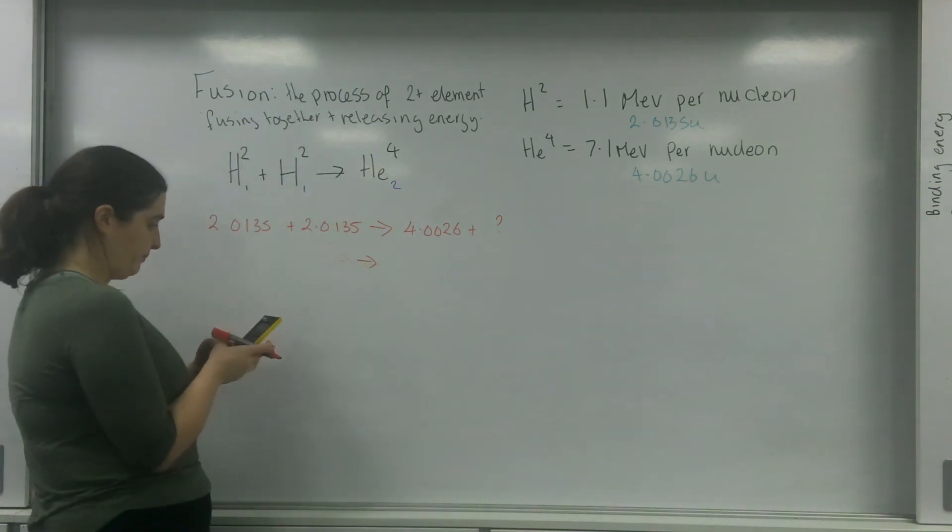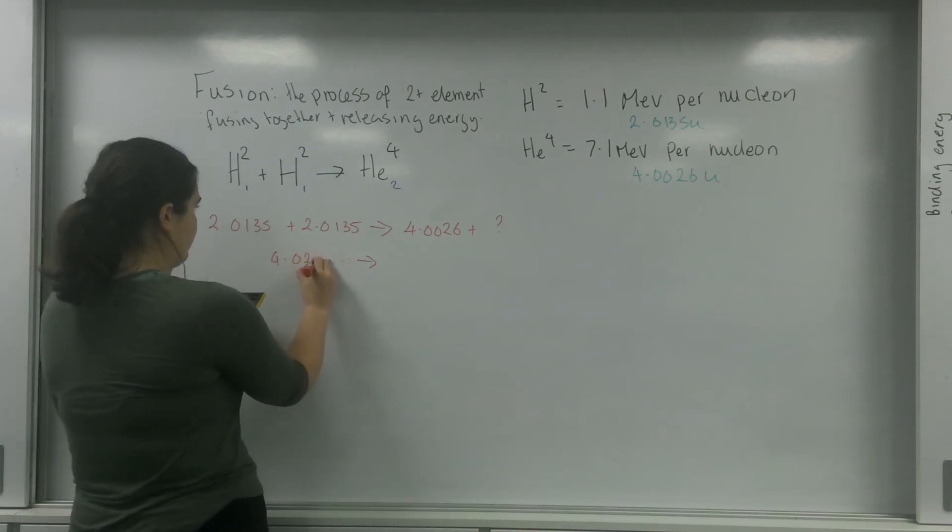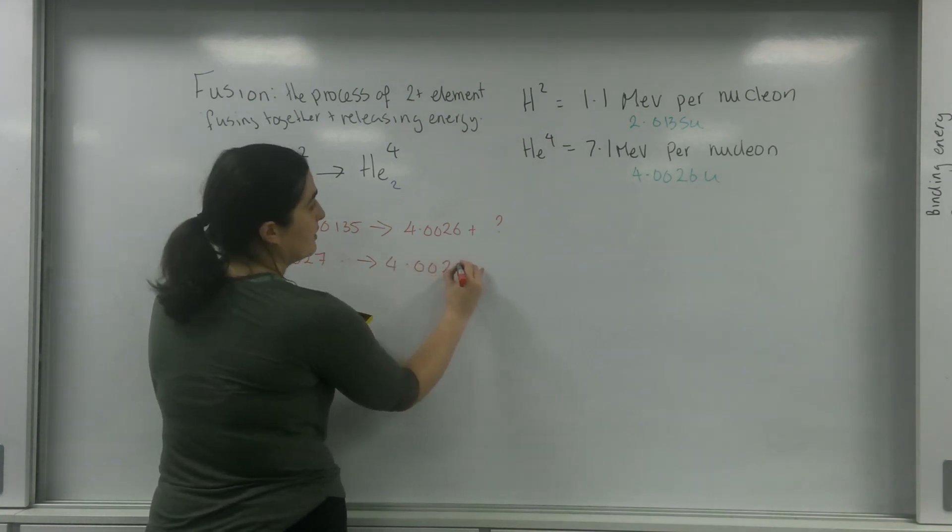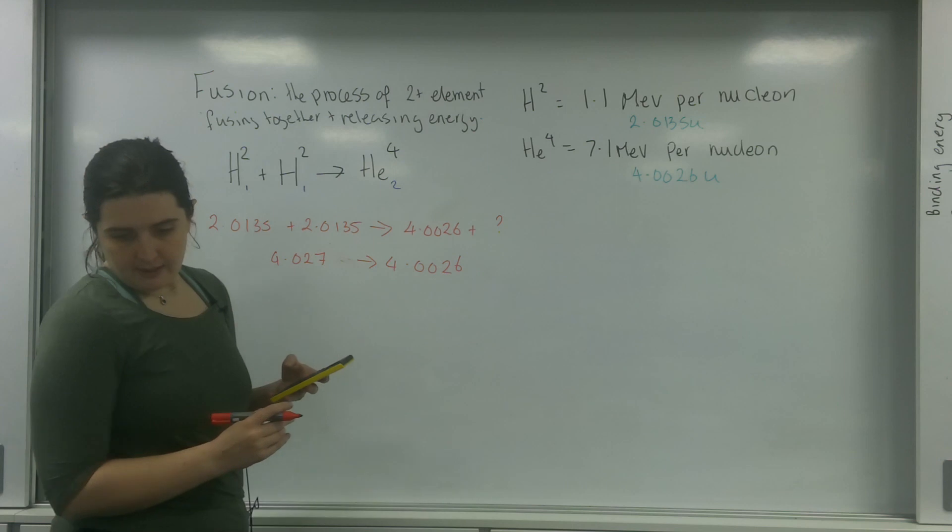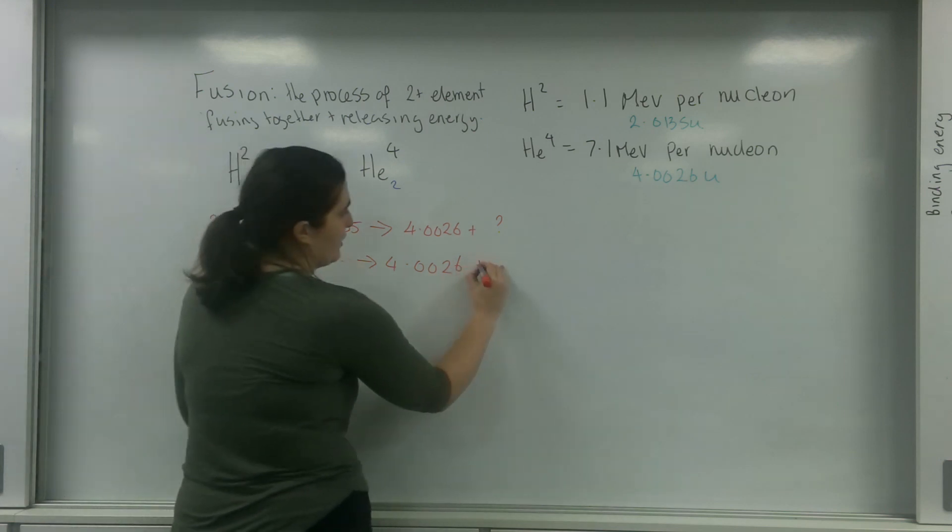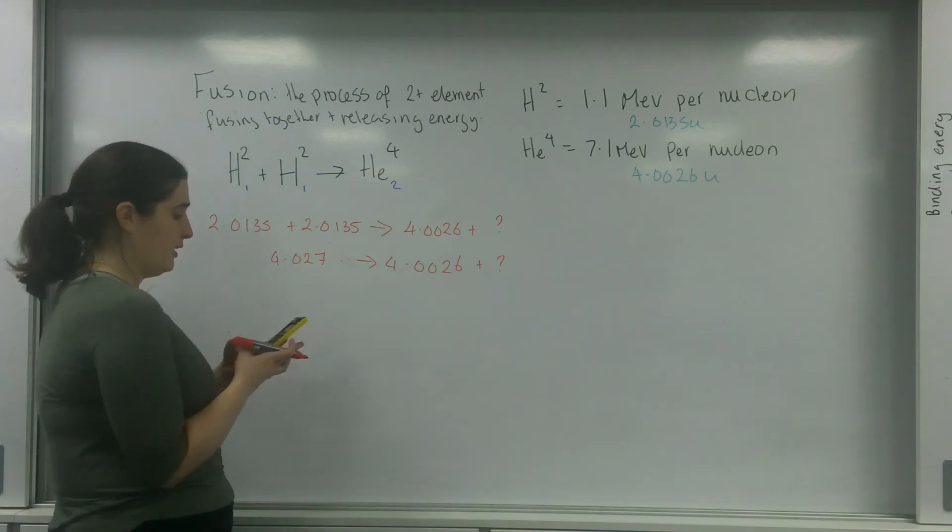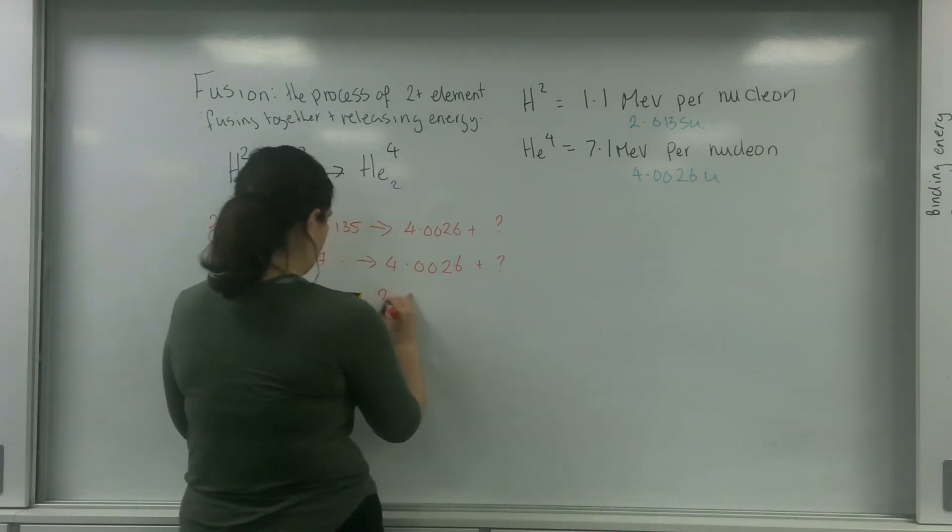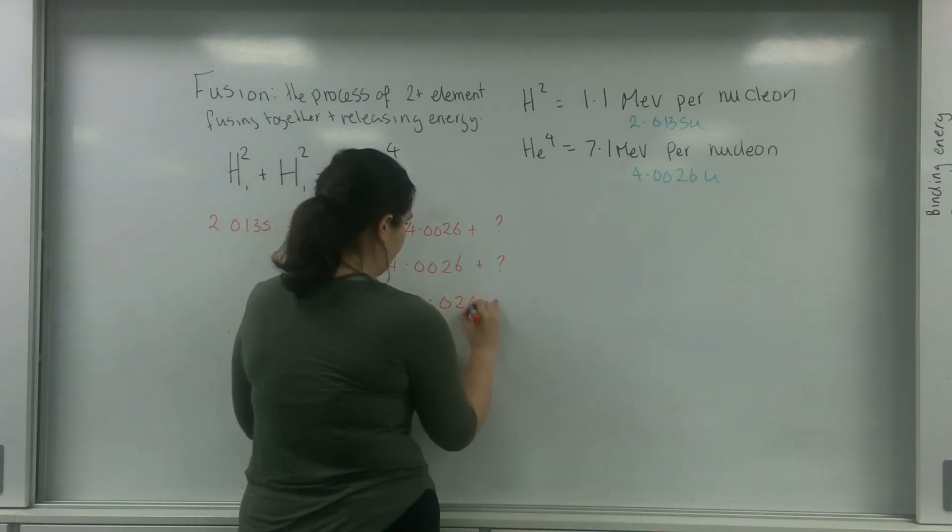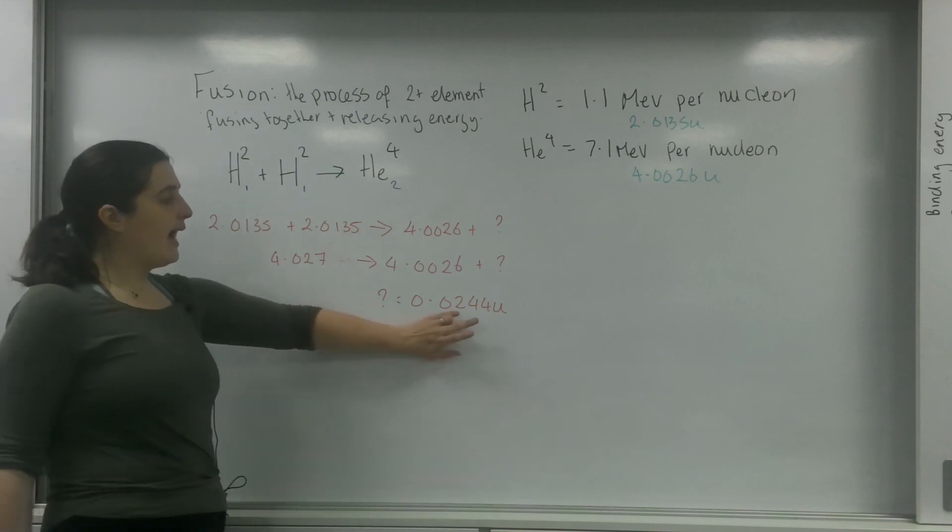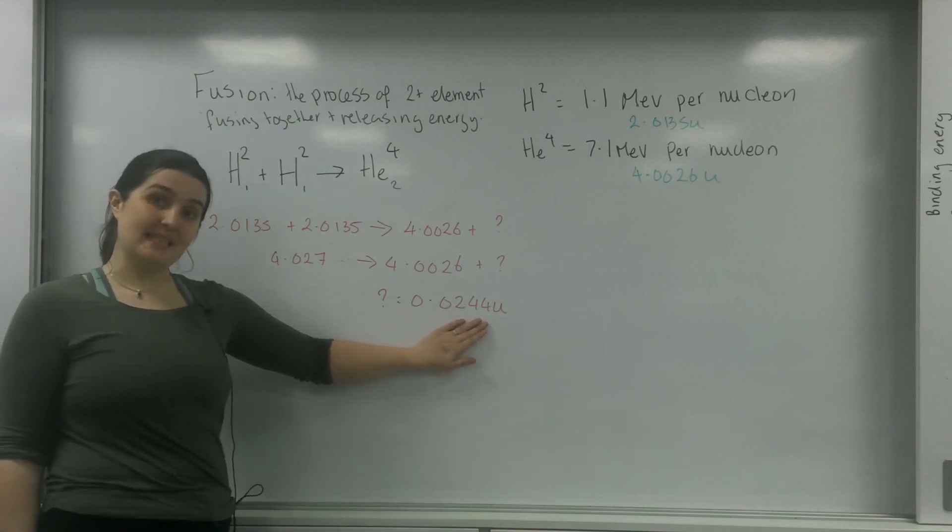Which means that my question mark is that minus 4.0026, which is 0.0244U. So what I've done here is I've worked out how much my mass deficit is.